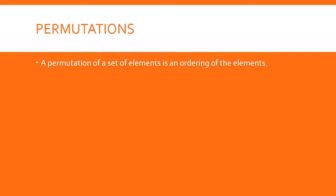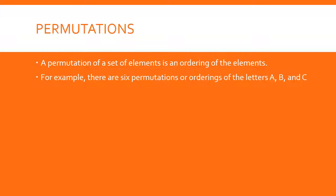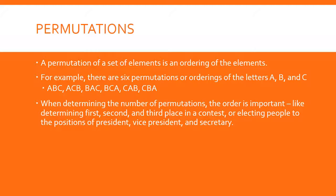A permutation of a set of elements is an ordering of the elements. For example, there are six permutations or orderings of the letters A, B, and C. We're talking specifically about putting them in different orders. When determining the number of permutations, the order is important.